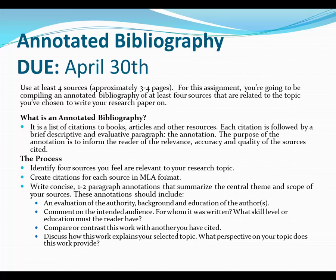For your annotated bibliography assignment, you'll need at least four academic sources before starting. The final annotated bibliography should be approximately three to four pages long — think about approximately one page per annotation. You're going to compile an annotated bibliography of at least four sources related to the topic you've chosen for your research paper. An annotated bibliography is a list of citations to books, articles, and other resources. Each citation is followed by a brief descriptive and evaluative paragraph — the annotation. The purpose of the annotation is to inform the reader of the relevance, accuracy, and quality of the sources cited.